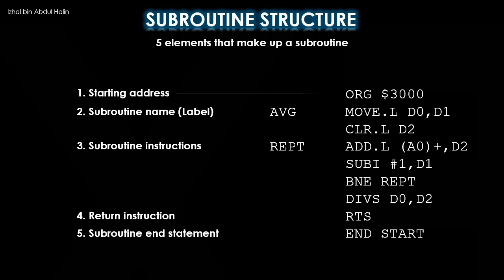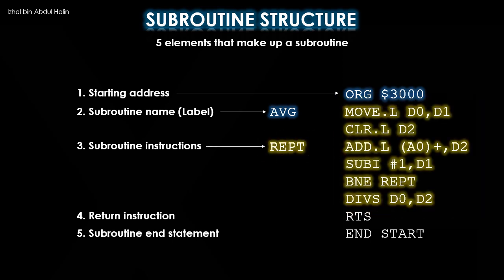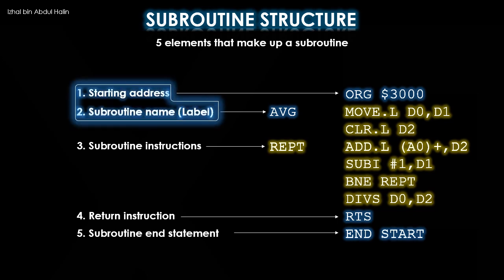The starting address is here, at address 3000. It signifies the start of the subroutine. The subroutine name is AVG, and holds the subroutine's first instruction, MOVE.L D0,D1. These are the subroutine instructions — they define what the subroutine does. RTS is the return instruction; it is always placed at the end of the subroutine instructions. Finally, this is the subroutine end statement — it signifies the end of the subroutine. You should also note that the subroutine's starting address is linked to the subroutine's name, which in turn is associated with the first instruction of the subroutine. This allows the subroutine to execute whenever it is called upon.